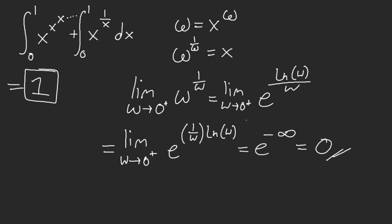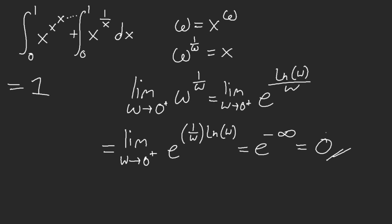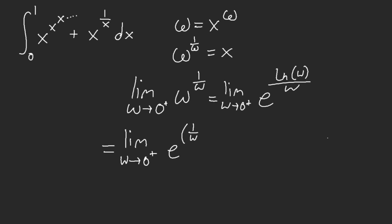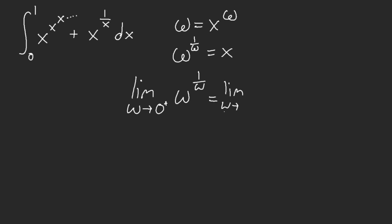This part is the hardest to see because it looks uncomfortably wrong. But this is technically correct. There might be some controversy, but another way of viewing this is to do a limit substitution, so we'll have 1 over u.